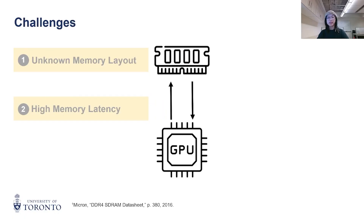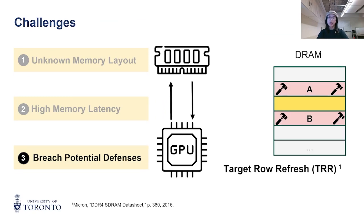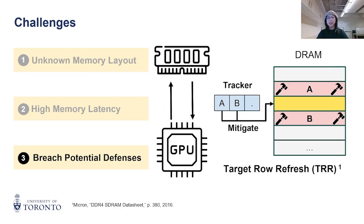Moving on to the final challenge, it comes from in-DRAM defenses like Target Row Refresh (TRR) built by chip manufacturers. TRR mitigates Rowhammer by keeping track of recently accessed rows in a fixed-size tracker and refreshing one of them every refresh interval.